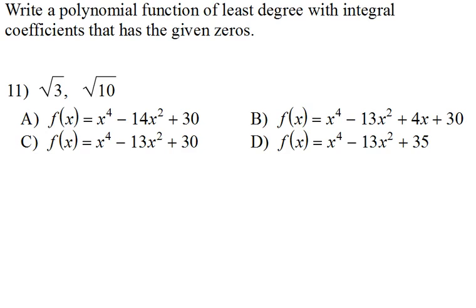Alright, so number 11 tells us it's the same thing. We're trying to write the polynomial that has these zeros. Now, there's something that you need to know when you have a square root as a zero, because they only give us two answers right here: square root of 3 and square root of 10.